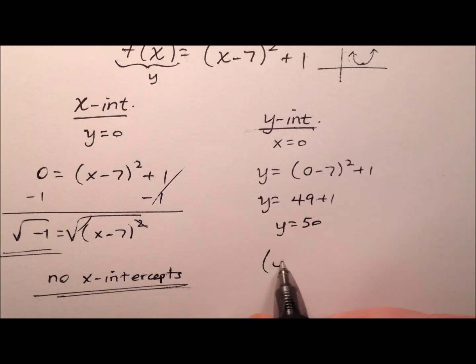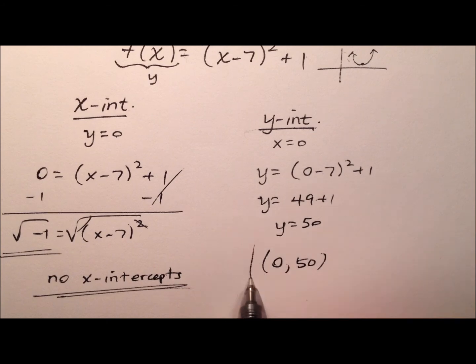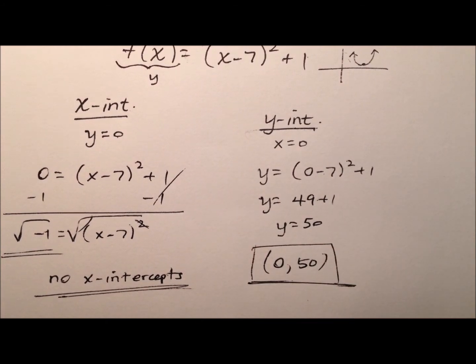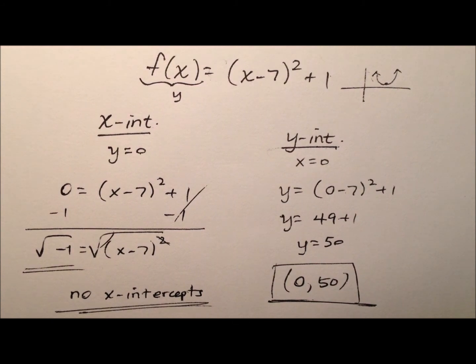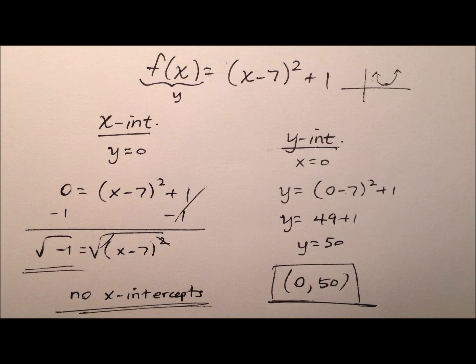We can write that as an ordered pair, 0, 50, and that will be the only intercept we have for this quadratic function. We've done it algebraically here first, so let's go ahead and finish the video by taking a look at the graph.